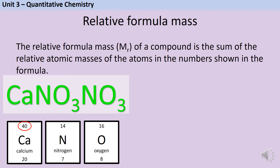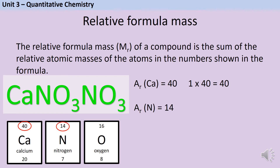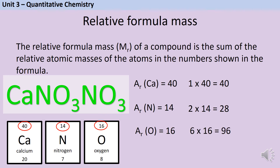Then we just go through the same process we've already been using. Calcium has a relative atomic mass of 40 and there is one calcium. Nitrogen has a relative atomic mass of 14 and there are two nitrogens. Oxygen has a relative atomic mass of 16 and there are six oxygens. Adding it all up together gives us the relative formula mass.